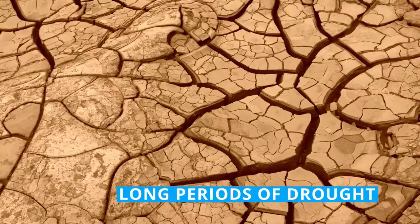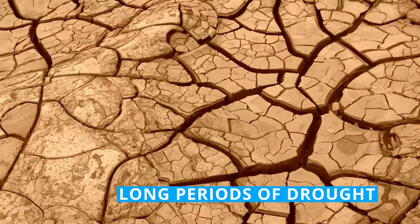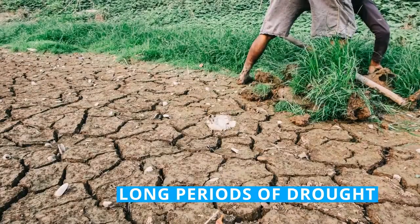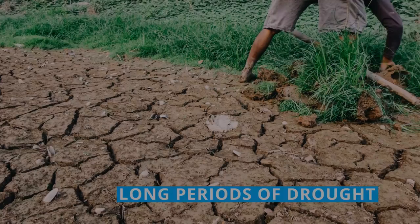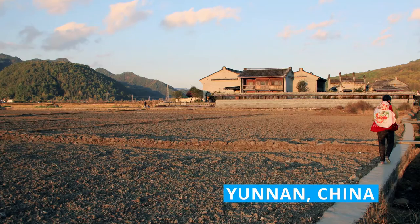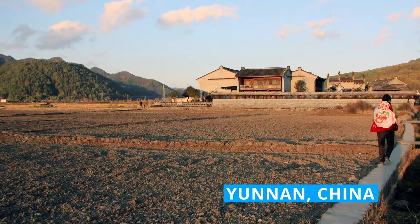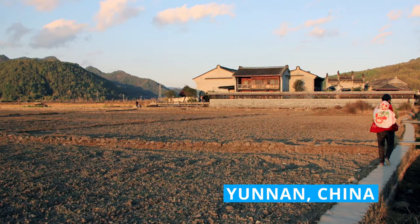But what if you live in a part of the world where long periods of drought occur? For eight months, no fresh water available for drinking water supply, cattle and irrigation. Yunnan, one of the poorest provinces of China, faces this type of disaster frequently.